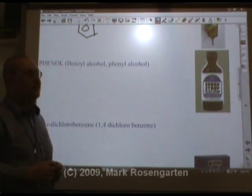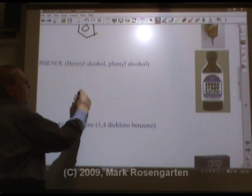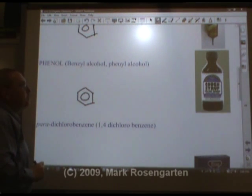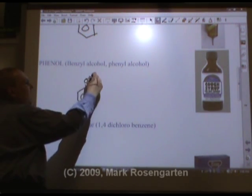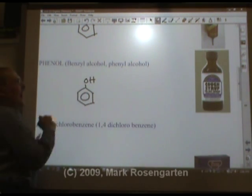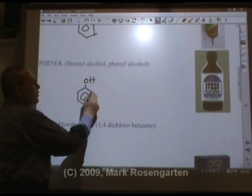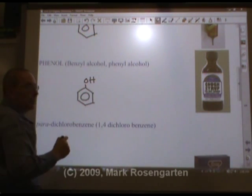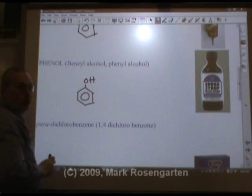Phenol, which is used in cough syrup as a cough suppressant, contains benzene and an OH group. It's called benzyl alcohol or phenyl alcohol. Sometimes the benzene ring is also known as a phenyl group when it's attached as a substituent — in this case the OH is the group dangling off the benzene ring.